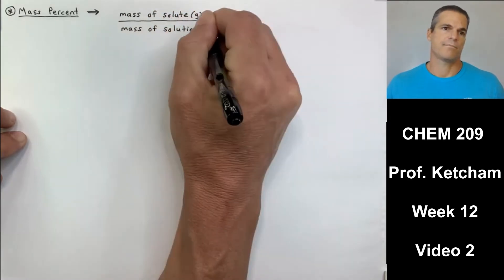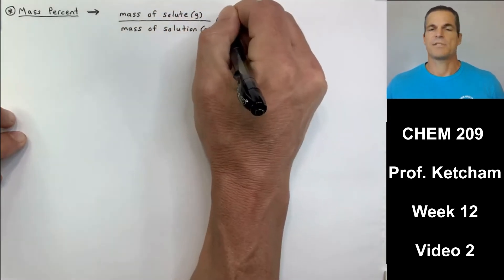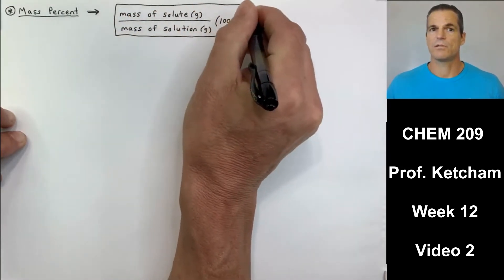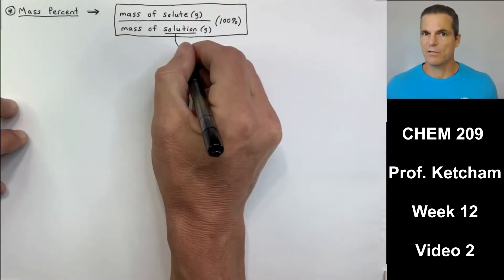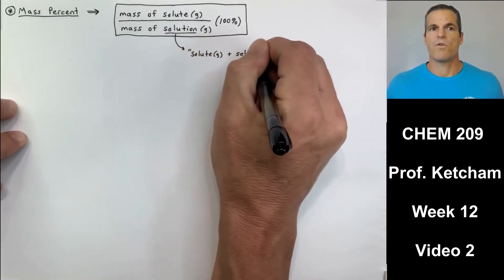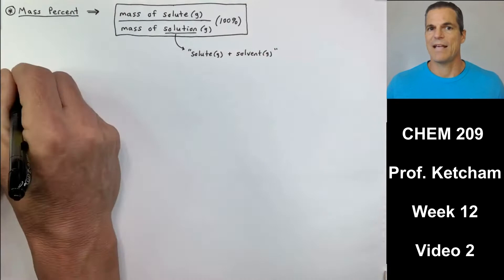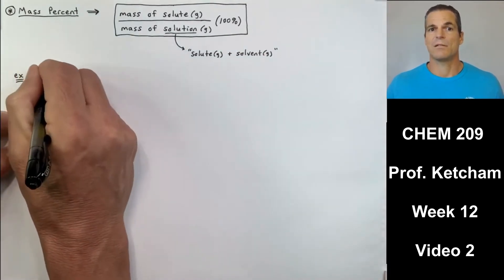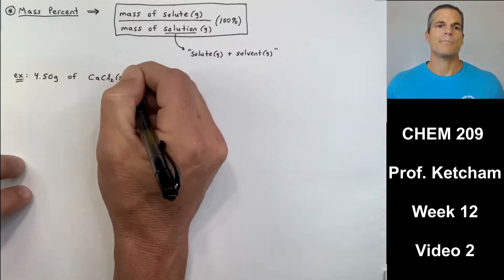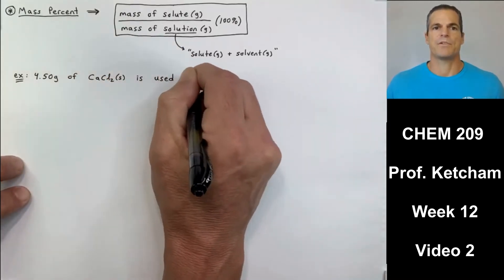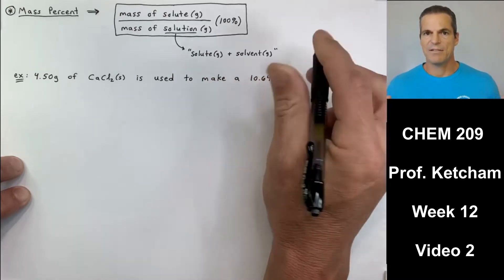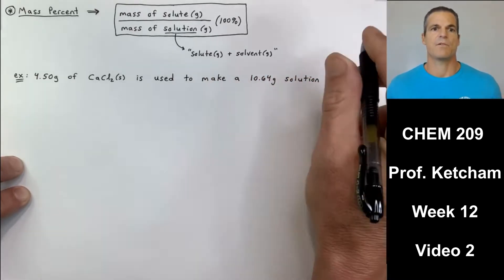Page one of our notes. Mass percent. Mass percent is the mass of solute divided by the mass of the entire solution times 100 percent. Fairly straightforward. If it's mass percent, we're talking about masses. The grams will cancel and our answer is always in percents. I'm going to do an example problem for you right now. But just to reiterate, solution is the solute and the solvent all together. Don't forget that.